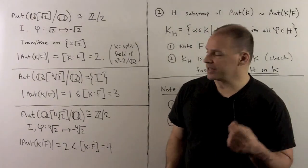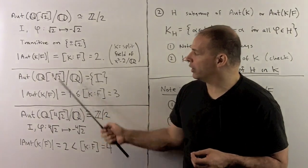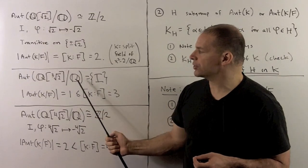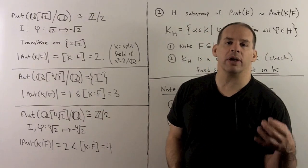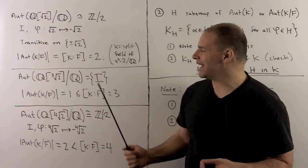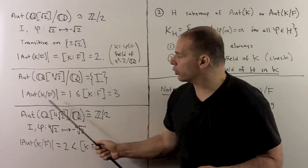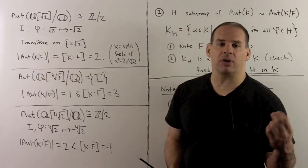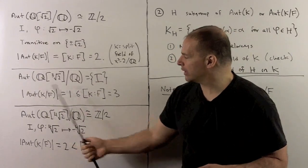Next example: we have the automorphisms of Q adjoined ∛2, fixing the rationals. As we've seen before, the only element here is the identity, so the order of the group is 1, the degree of K over F is 3, and we have strict inequality.